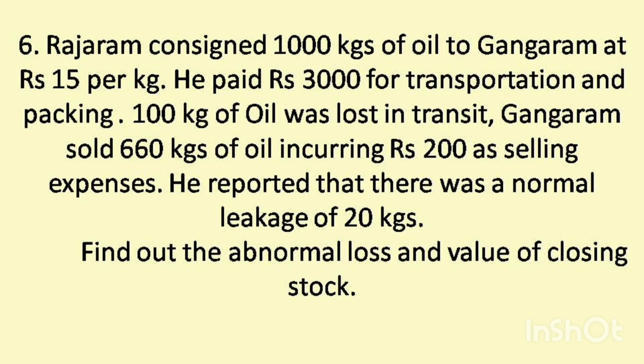Question No. 6: Raja Ram consigned 1,000 kg of oil to Ganga Ram at Rs. 15 per kg. He paid Rs. 3,000 for transportation and packing. 100 kg of oil was lost in transit. Ganga Ram sold 660 kg of oil incurring Rs. 200 as selling expenses. He reported that there was a normal leakage of 20 kg. Find out the abnormal loss and value of closing stock.